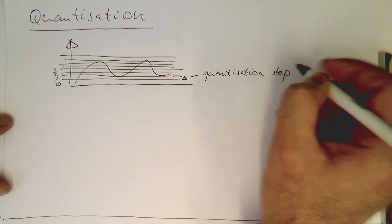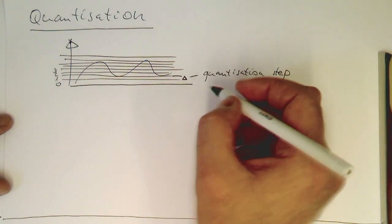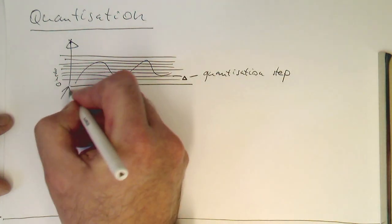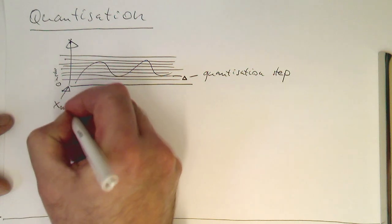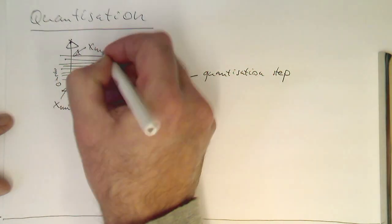That's our quantization step, defined by the minimum value. Let's say this is our x_min and this is here our x_max.